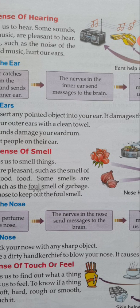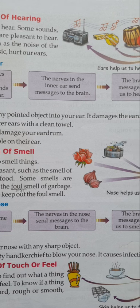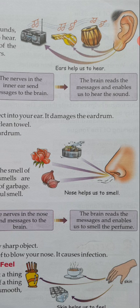After that, the nerves in the inner ear send messages to the brain — joh inner ear ka hissa hootay hai, uske joh nerves hootay hain, woh brain ke paas information pahuchate hain. After that, the brain reads the messages and enables us to hear the sound — joh brain hootay hai, woh message padhta hai, aur usse hum sound sun paatay hain.